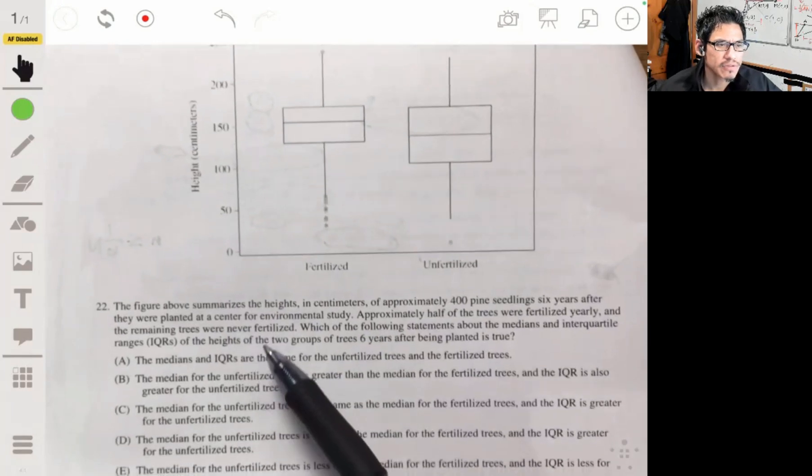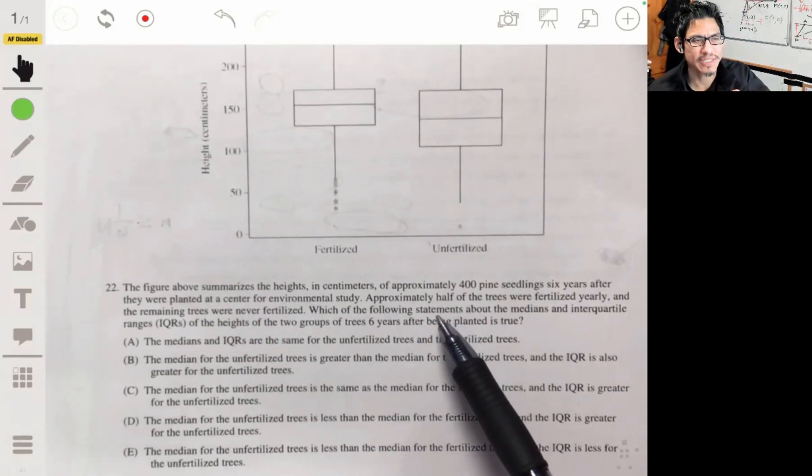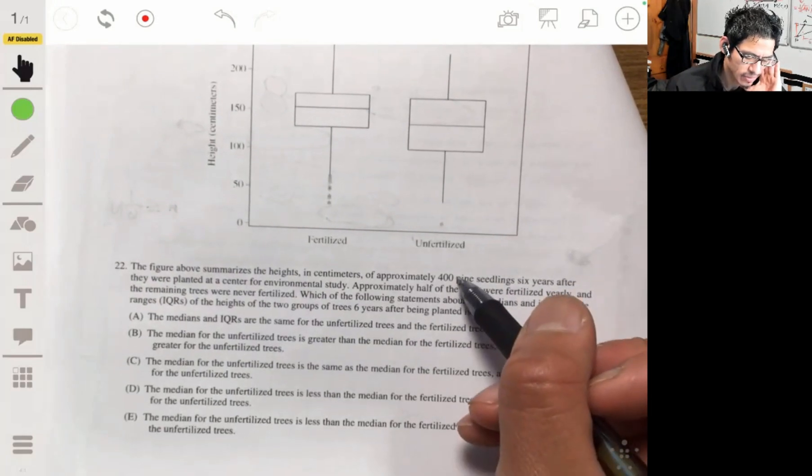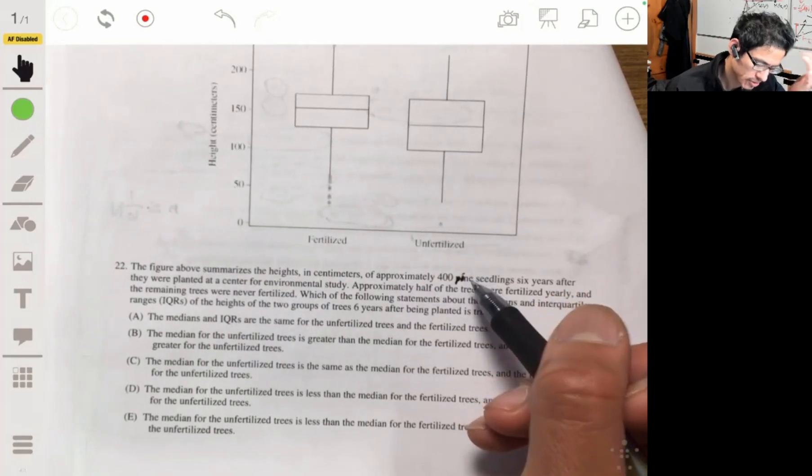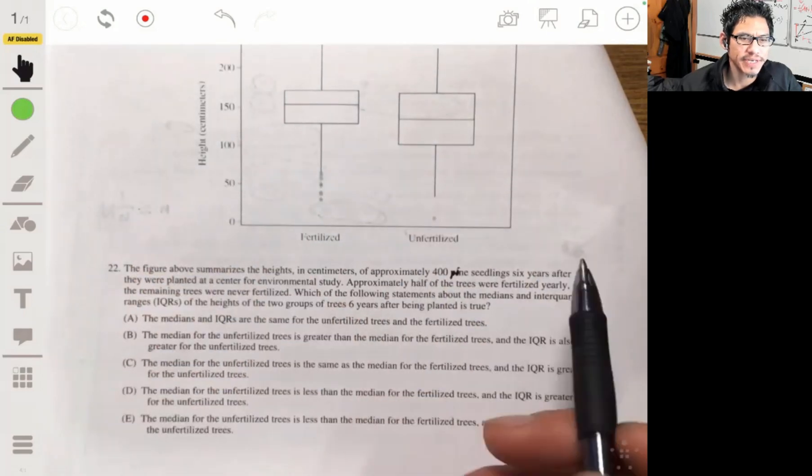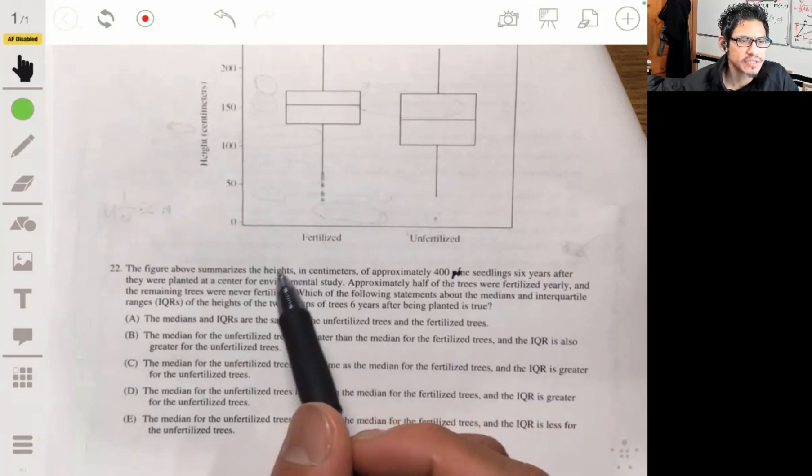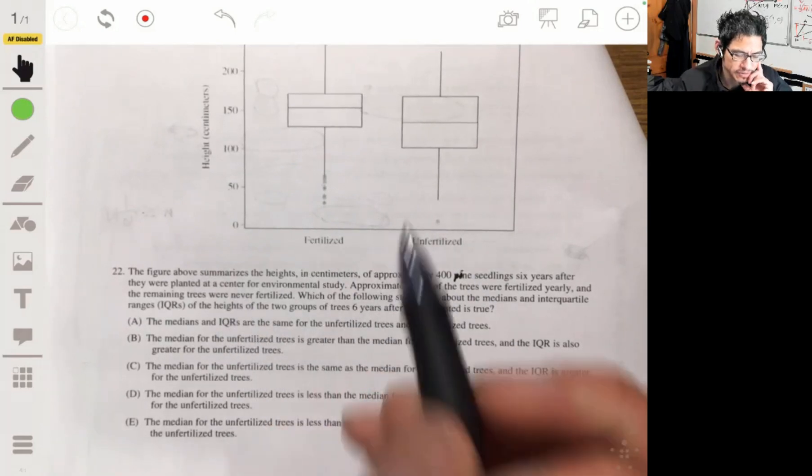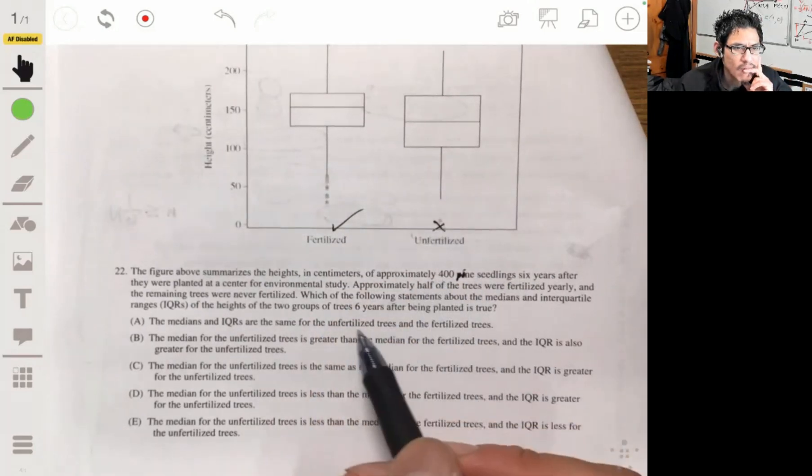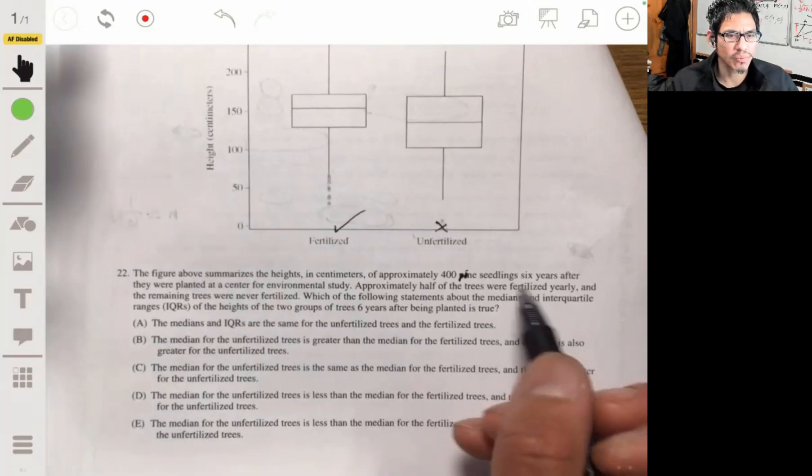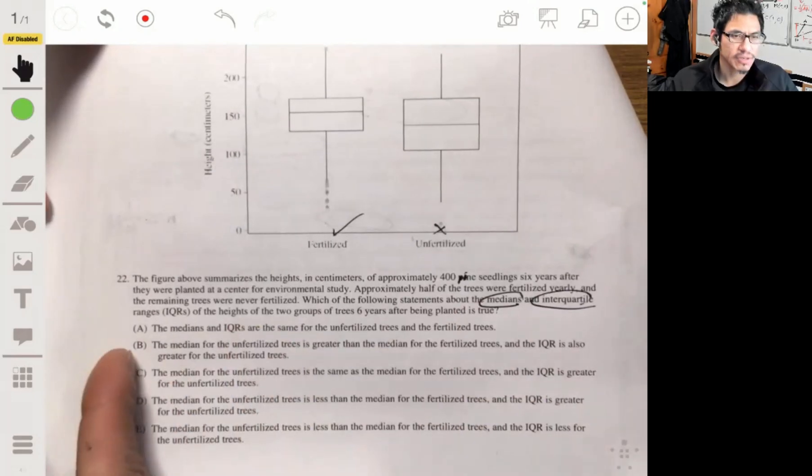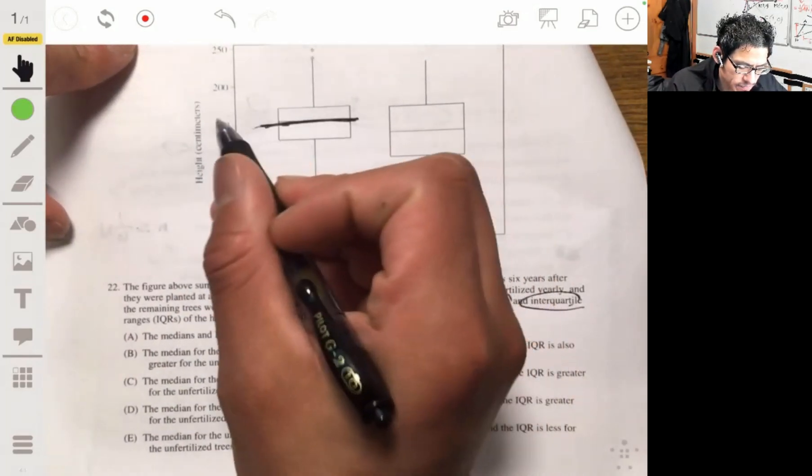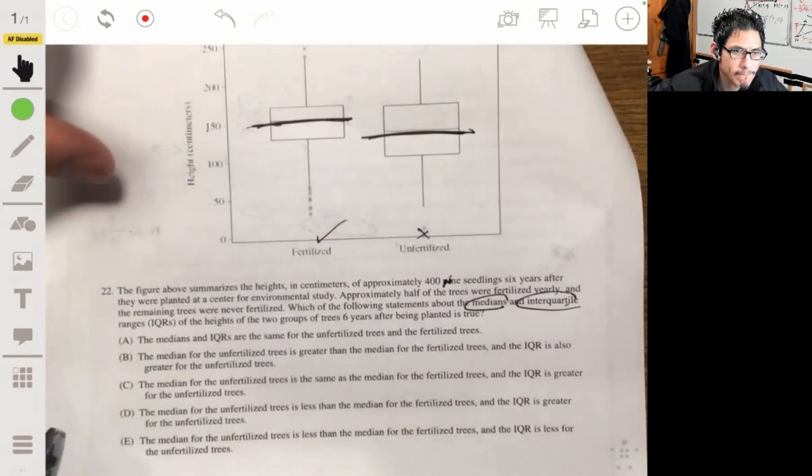Here we got some box plots where we're talking about the heights in centimeters of approximately 400 pine seedlings. These stats people really like pine seedlings. You'll see these every year. Okay, centimeter, spiky trees. Anyways, about 400 of them. Six years later they were planted at a center for a study. Half of them were fertilized yearly and the remaining were never fertilized. So which of these statements is correct about the medians and interquartile ranges or the IQRs? Basically wants to see that you know how to read these graphs correctly. So remember, this is the median, this is the median for the unfertilized. The IQR is this distance. And IQR for the fertilized one is this distance.